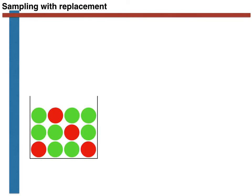We are going to suppose that we have a cup containing red and green balls, as shown here. Statisticians often talk about the balls being in an urn rather than a cup. Alternatively, they might state that there is a population containing N green and M red balls. The point is that there are a finite number of balls and exactly two types of balls. In this case, there are exactly 12 balls: four of them are red, while eight of them are green.